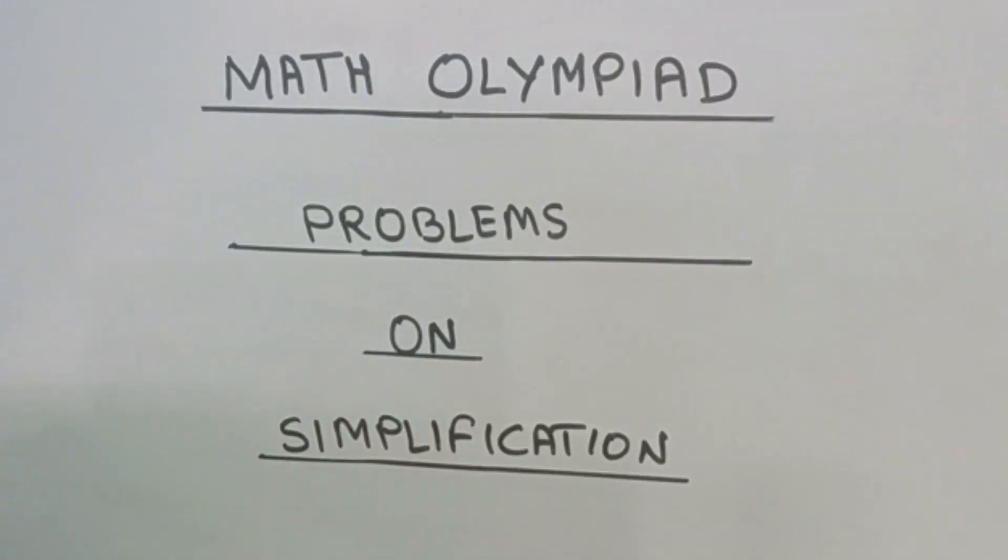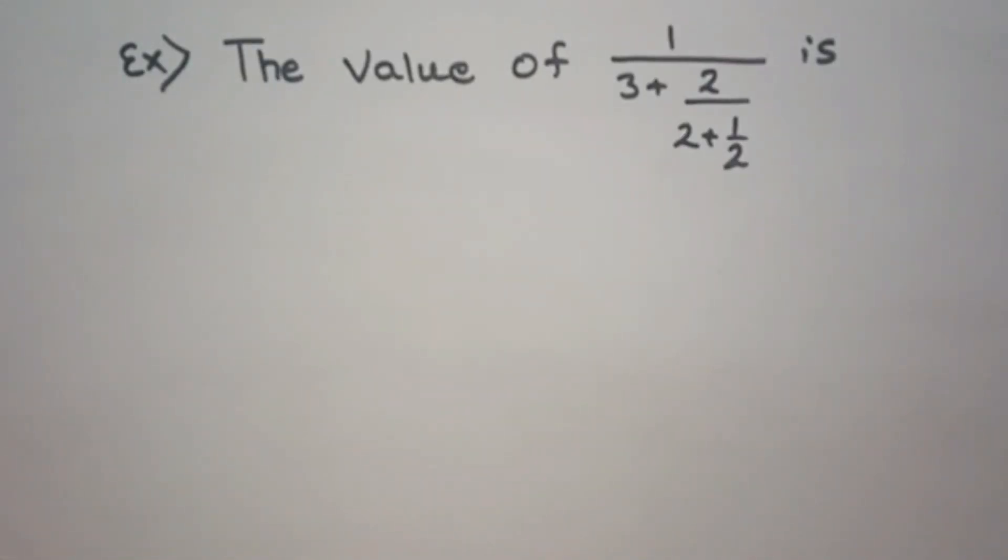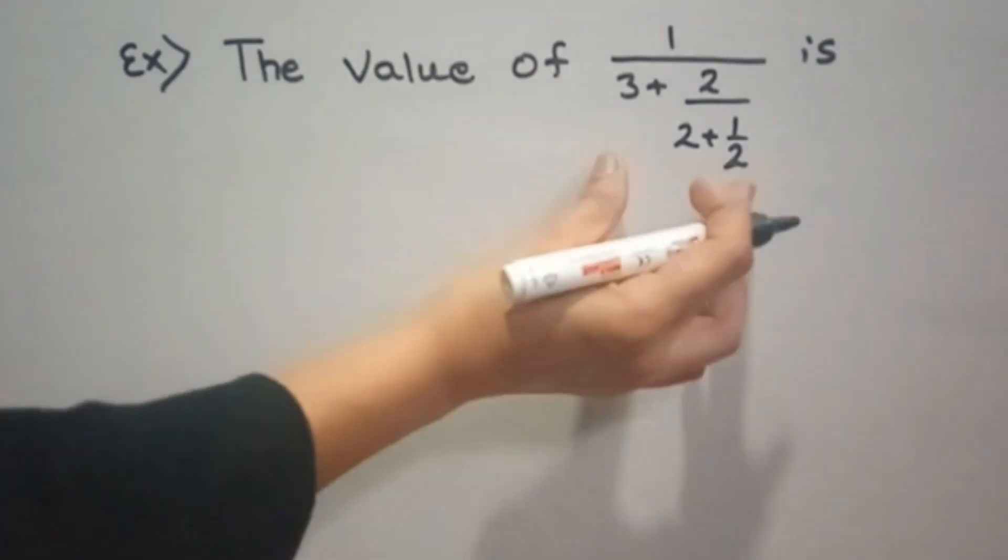Hello friends, welcome back to my channel. Our today's topic is maths olympiad problems on simplification. For example, the value of 1 upon 3 plus 2 upon 2 plus 1 by 2. We have to find the value of this term.